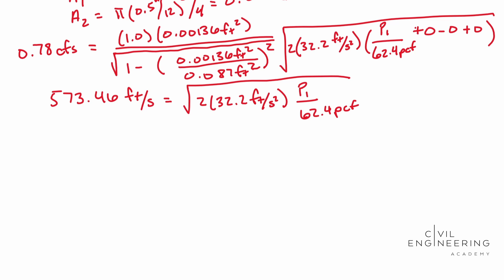So if you square both sides, you should end up with 328855.61. And that's going to be feet squared per second squared. So this is where you carry out your units to really double check that you're doing your math right. And this is going to be equal to that 2 times 32.2 feet per second squared. And we multiply that by the P1 over 62.4 pounds per cubic foot.